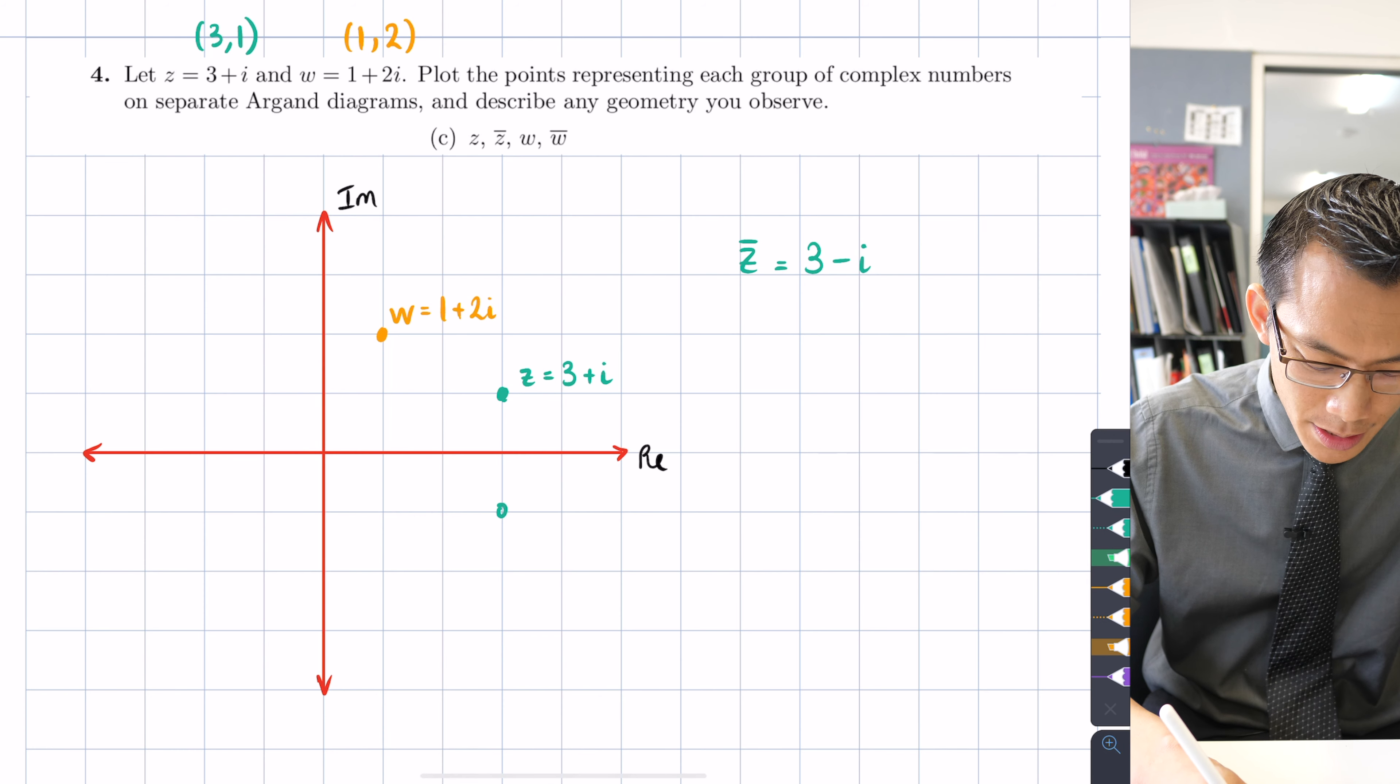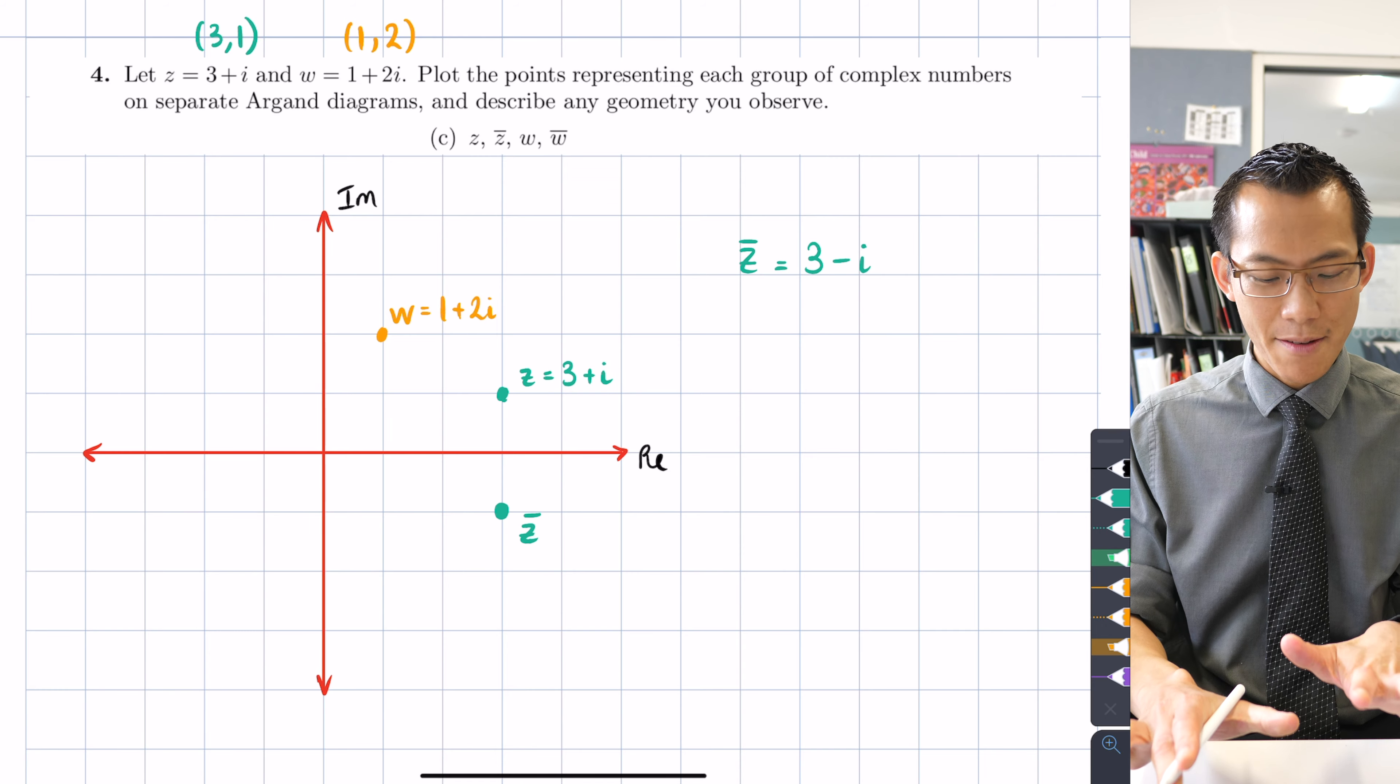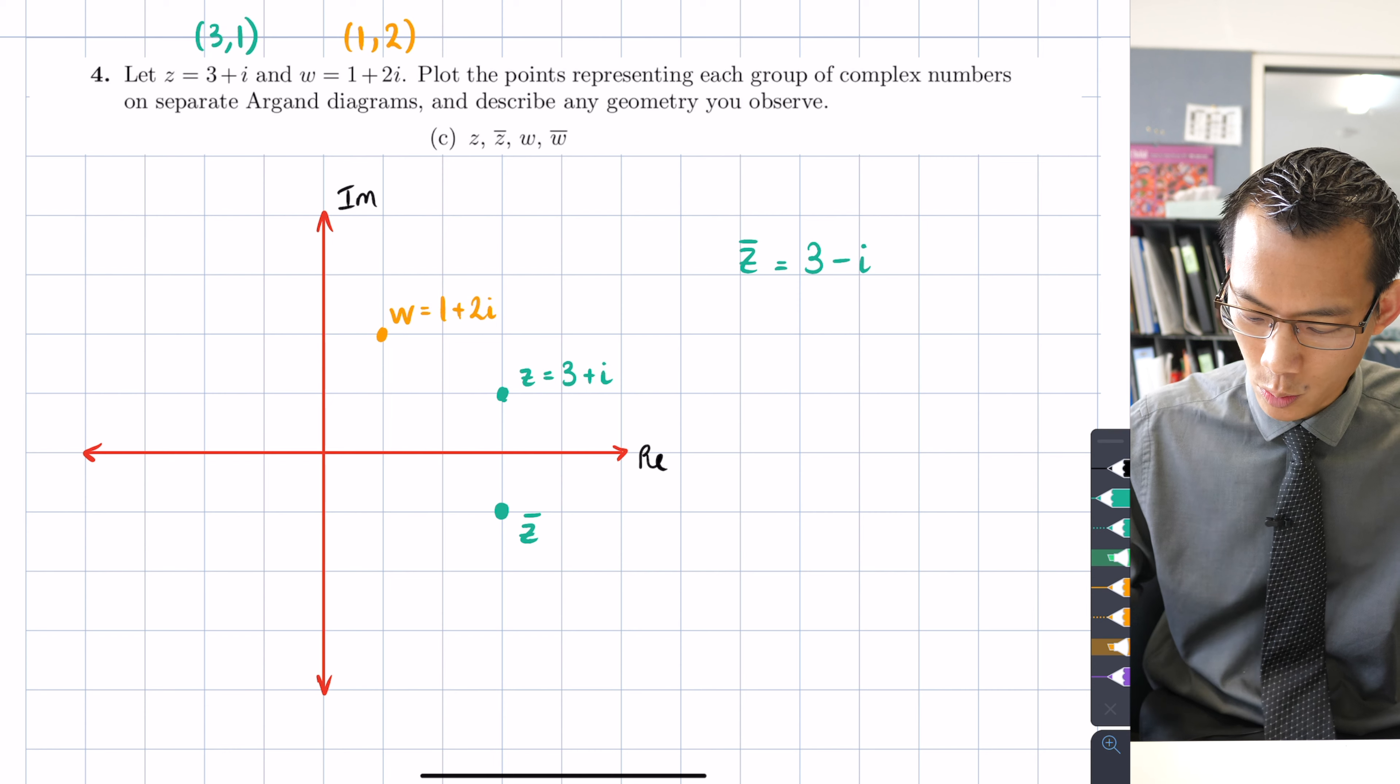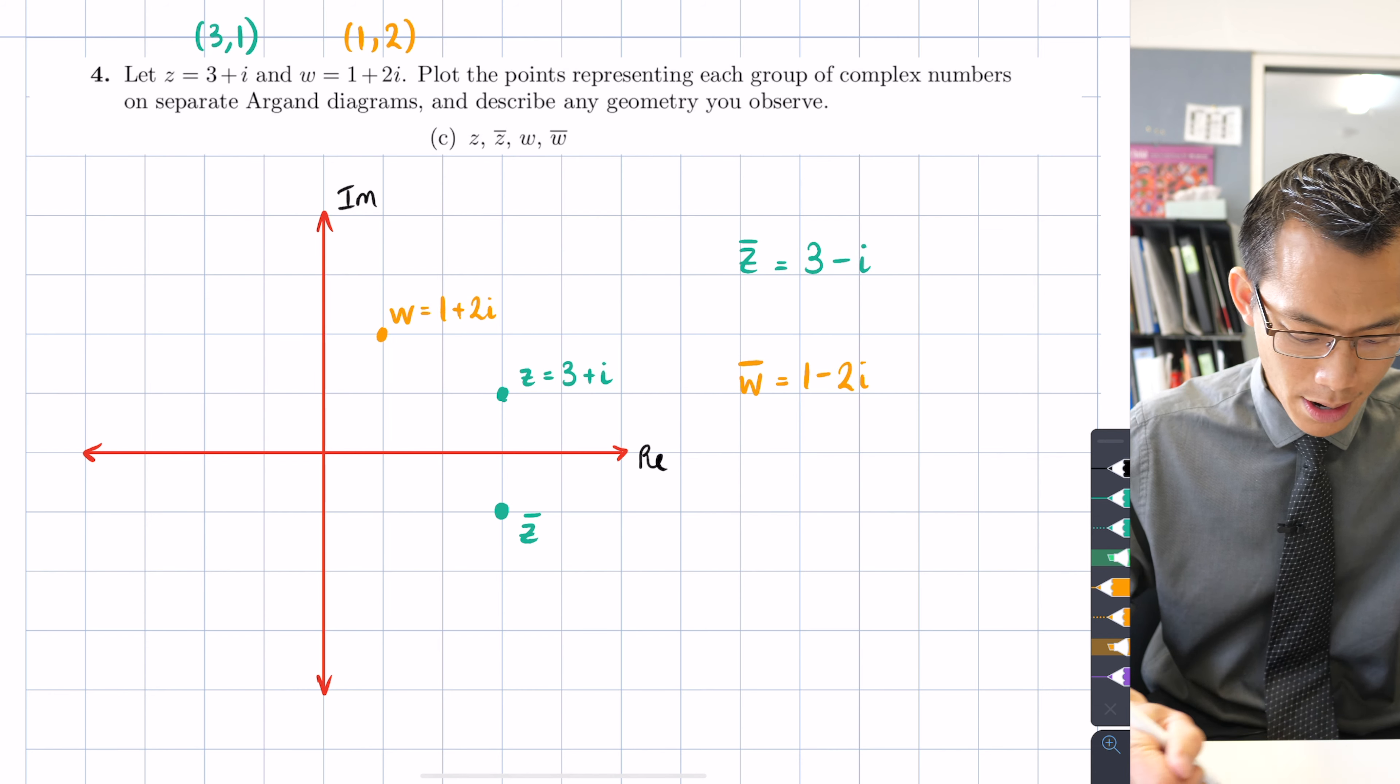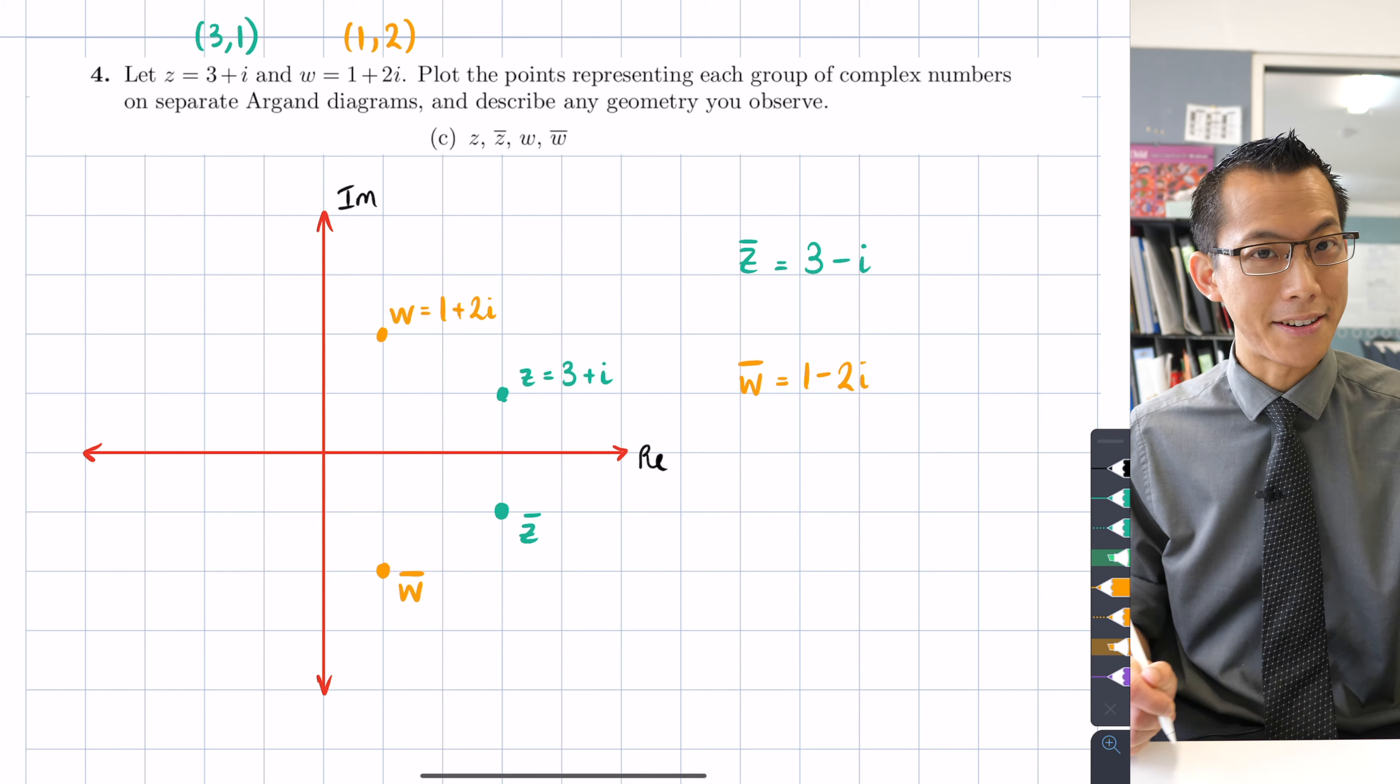This is z̄. We'll come back to its geometric significance in a second. Let's put w̄ on as well. So being that w is 1 + 2i, w̄ is 1 - 2i. So I'm gonna place w̄ down here.